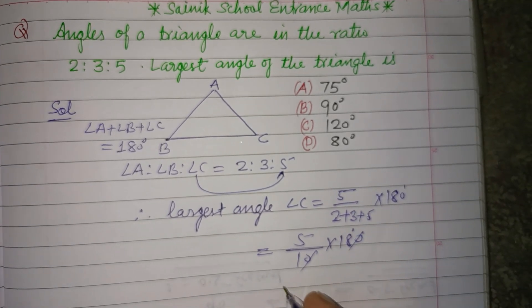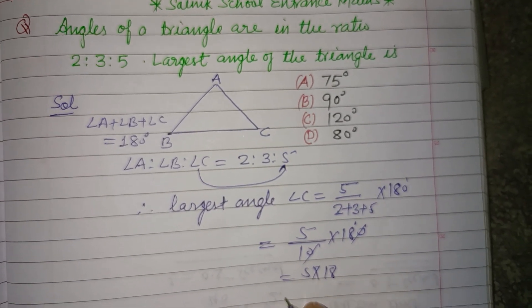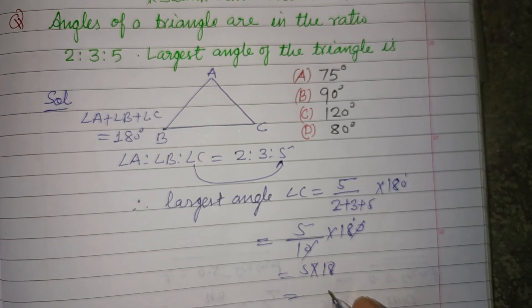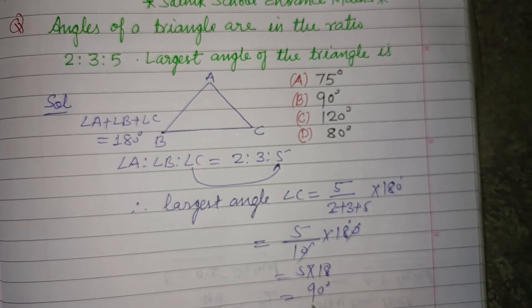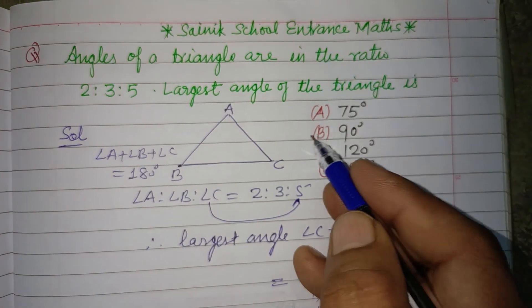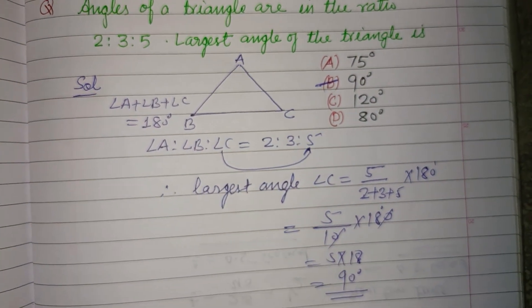Zeros cancel, we got 5 into 18, which is 90. So 90 degrees is the correct answer of this question, which is found in option B.